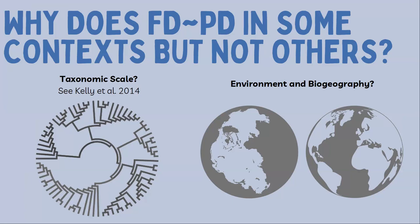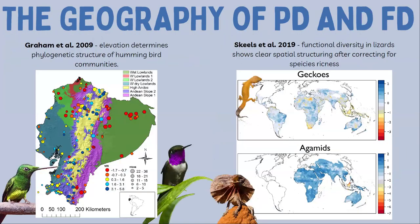What I actually want to talk about is whether the relationship between FD and PD is in some way mediated by environment and biogeography — the environmental and biogeographic history of the taxa you're looking at. There's good reason to think geography mediates this relationship because we know both phylogenetic diversity and functional diversity vary along geographical gradients.